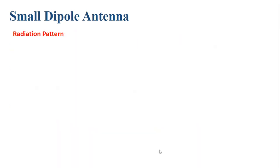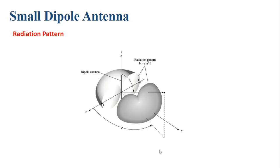The radiation pattern of the small dipole is again the same as that of the infinitesimal or Hertzian dipole. It radiates equally in a given direction, becomes zero at the center axis, and increases to a maximum — similar on both sides. This radiation pattern is similar to that of an omnidirectional antenna, radiating in one plane.